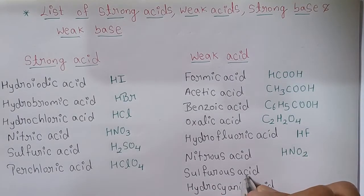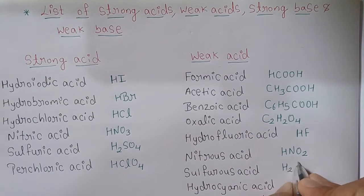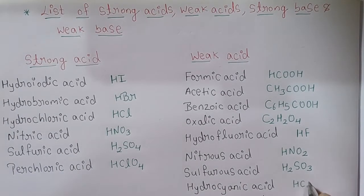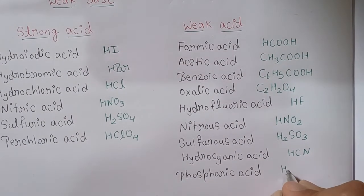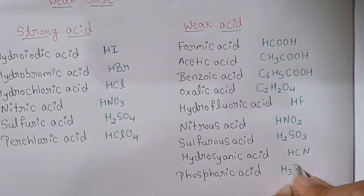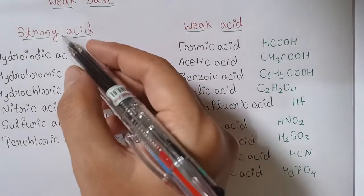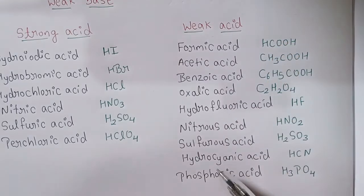Continuing weak acids: sulfurous acid (H2SO3), hydrocyanic acid (HCN), and phosphoric acid (H3PO4). These complete the list of strong acids and weak acids.